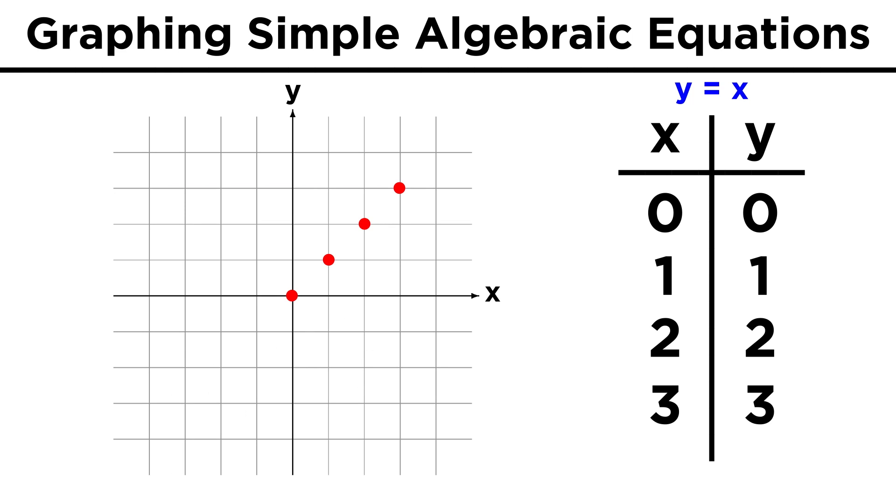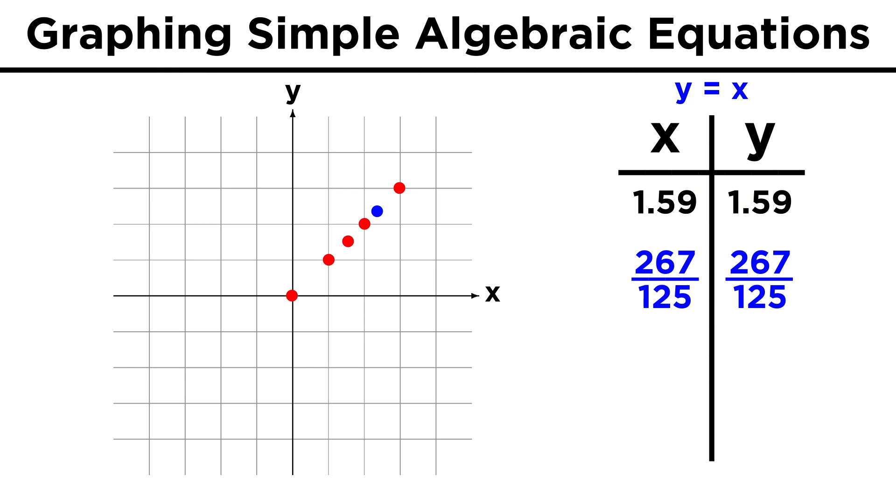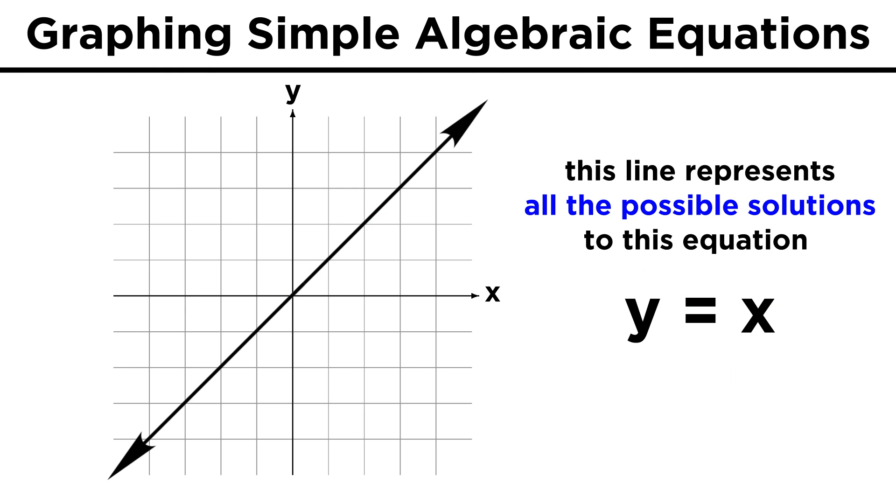Now with all these dots pertaining to our original data set, we may as well connect them, because it's not just integers that satisfy this relationship. If x is one point five nine, so is y. If x is two hundred sixty-seven one hundred twenty-fifths, so is y.